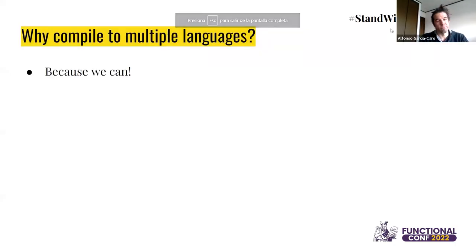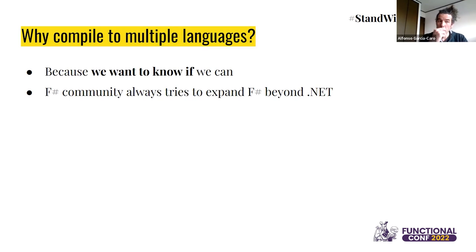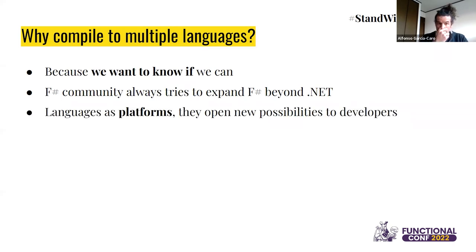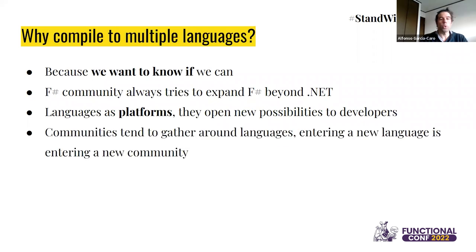So why compile to multiple languages? One of the reasons to do many open source projects is — because we can, because we want to know if we can. We saw an opportunity and the community tried to take it. The F# community always tries to expand F# beyond .NET because F# developers love the language and want to make it available in other places. I like to think of a language as a platform — JavaScript is the web platform, Rust is becoming a systems platform and also a WebAssembly platform, Python is very good for data science and machine learning. When you enter a language, you enter a platform — you get more facilities, and communities tend to gather around a language.